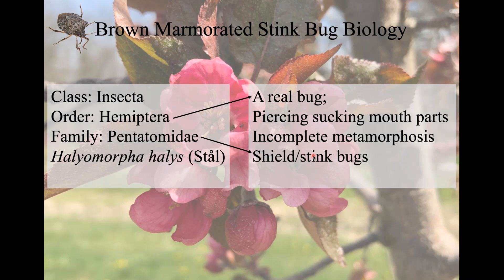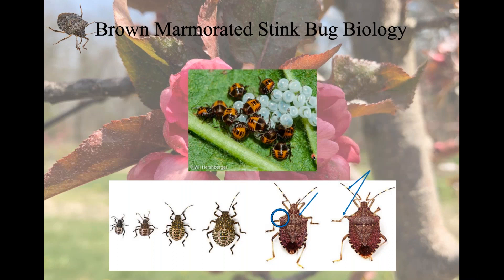The shield bugs share hardened forewings that cover their membranous back wings when at rest — they lay flat, unlike some other insects. The nymphs, when they first emerge, are very brightly colored orange and black, and then go through five instars before reaching the adult form. The adult on the left is the male and the female is slightly larger.